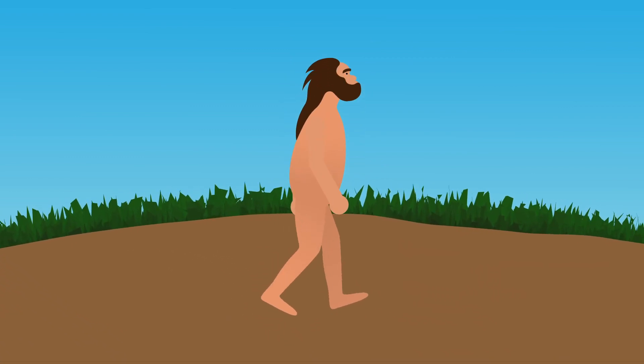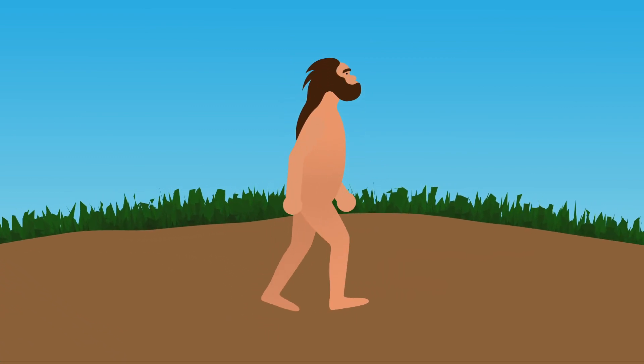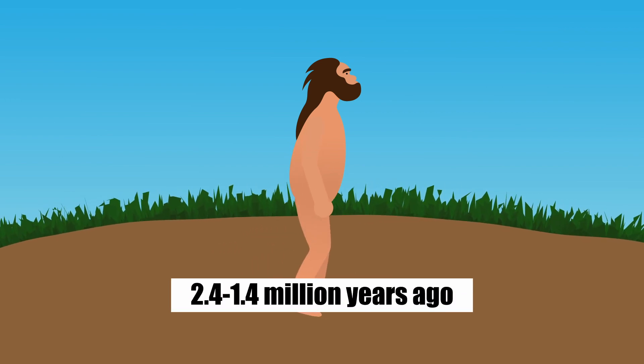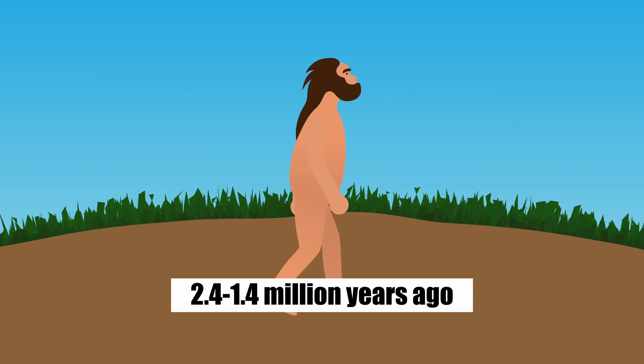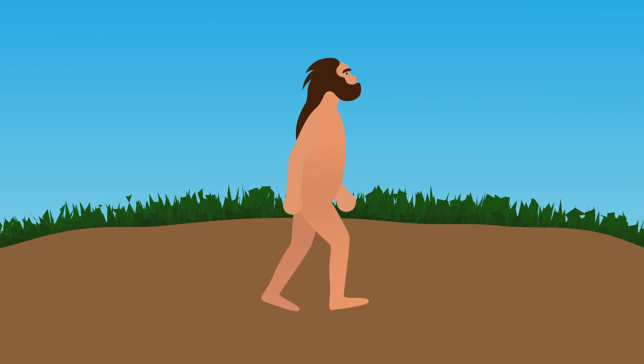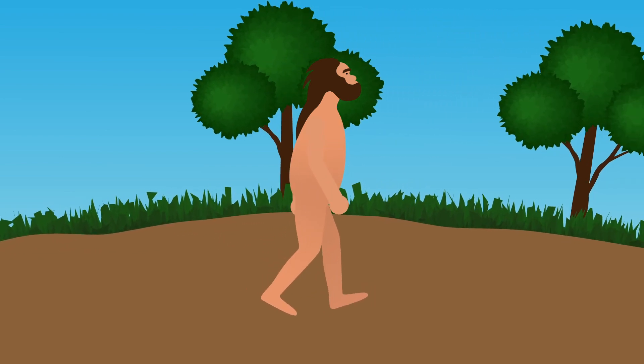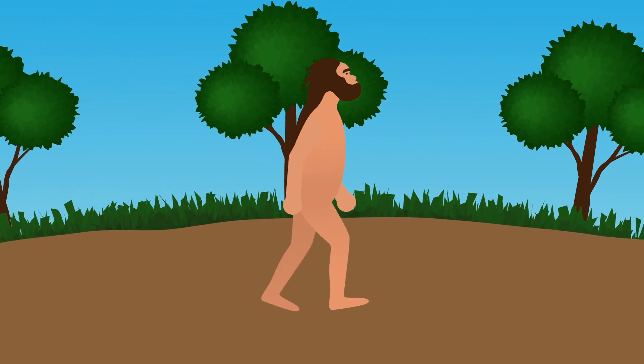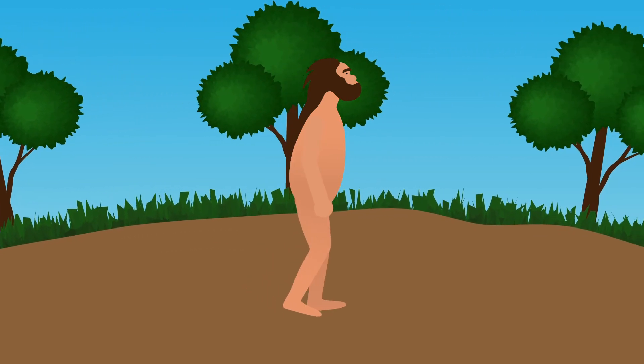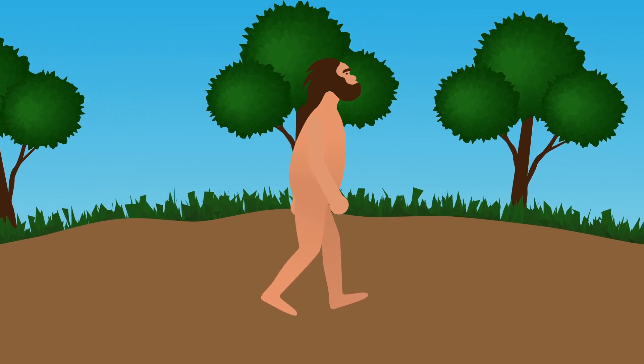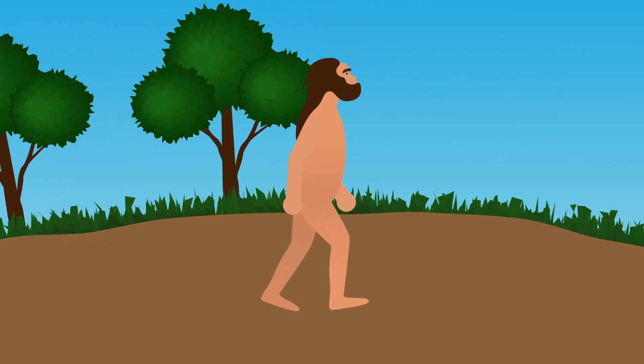For us humans, we are a pretty recent addition to this story. At 2.4 million years ago to 1.4 million years ago, Homo habilis, one of the earliest human ancestors currently known, would have walked around in a world quite similar to the one we know today. But that doesn't mean that they wouldn't have experienced the forces that created our modern Earth.